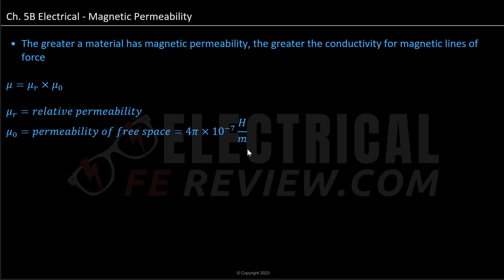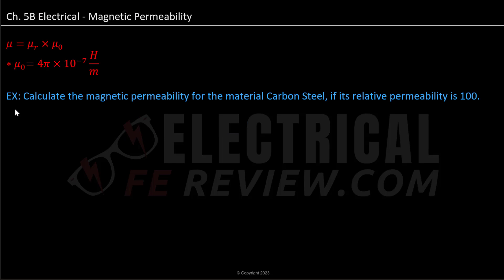Let's go ahead and further understand what this means by looking at an example. We are asked to calculate the magnetic permeability for the material carbon steel if its relative permeability is 100. Referring back to our formula, we can set up magnetic permeability, denoted as mu (μ), to be equal to μr times μ₀.